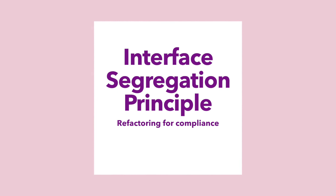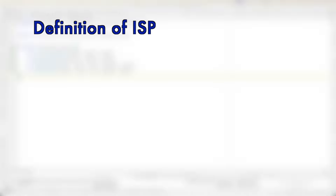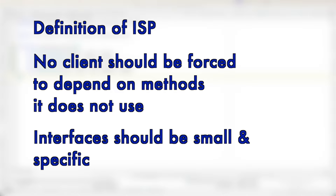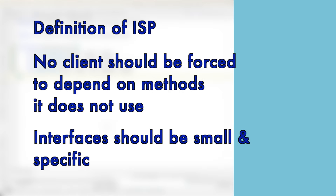Today we will continue our journey concentrating on the next principle, which is the interface segregation principle. Before we start refactoring the code, let's recall what interface segregation principle is all about. It basically says that no client should be forced to depend on methods it does not use, which means interfaces should be small and specific so that clients implement only those which they need.